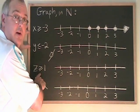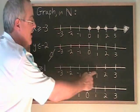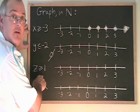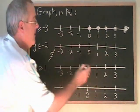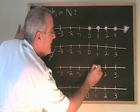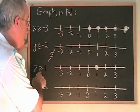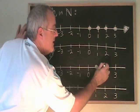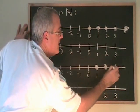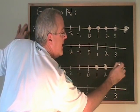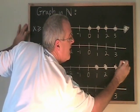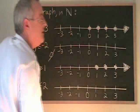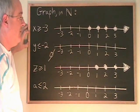z greater than or equal to 1. 1 is a natural number and it is equal to itself, so therefore 1 will be part of our answer. All of the natural numbers that are greater than 1 will also be part of our answer — so 2 is part of our answer and 3. Again, we can draw an arrow to show that the answer continues on forever in the positive direction.